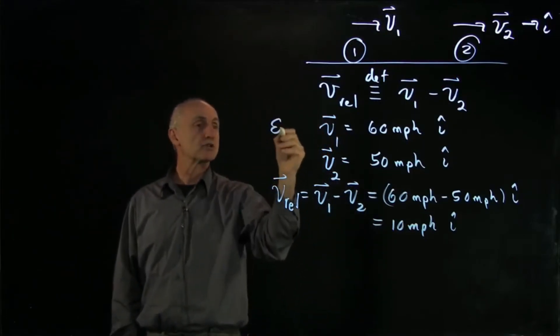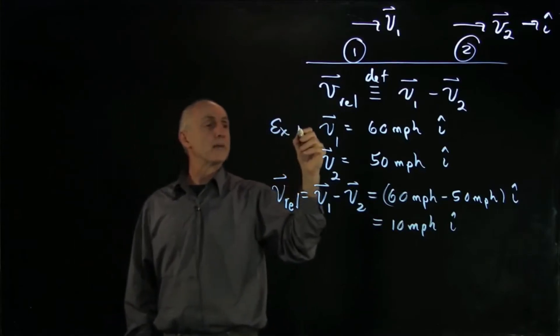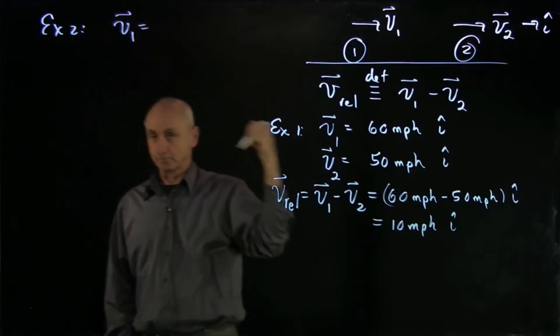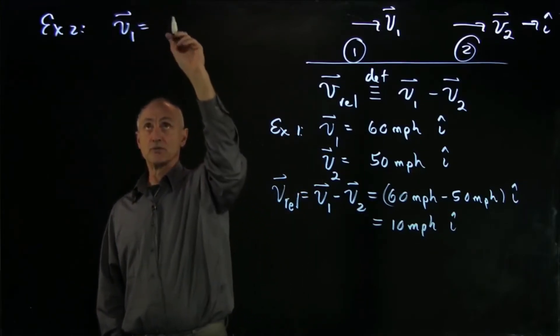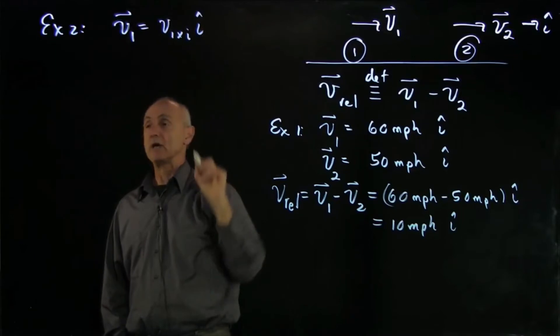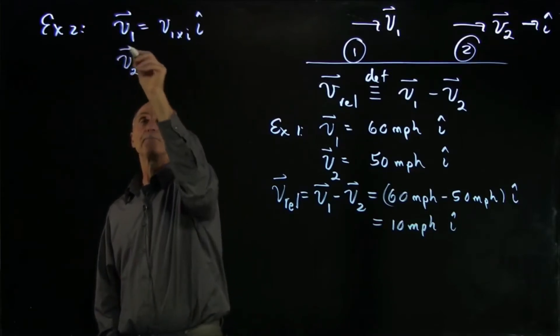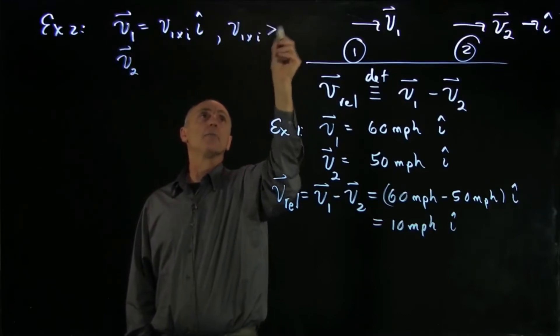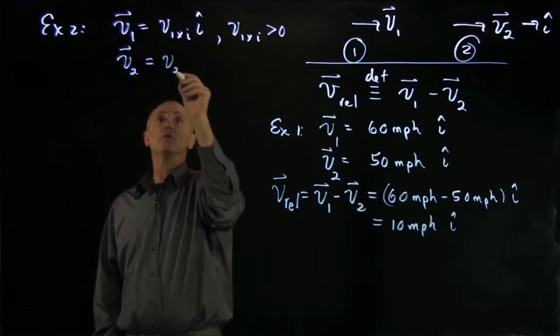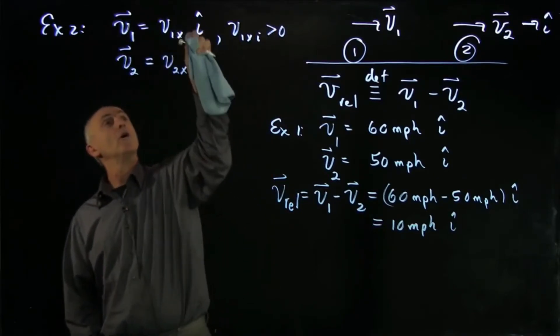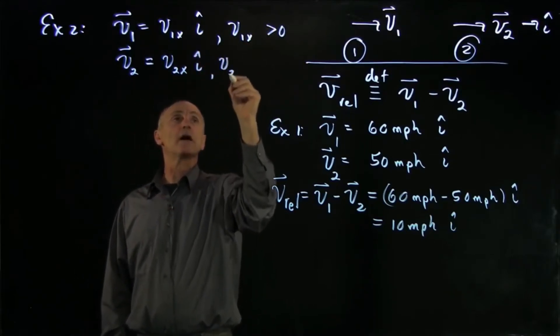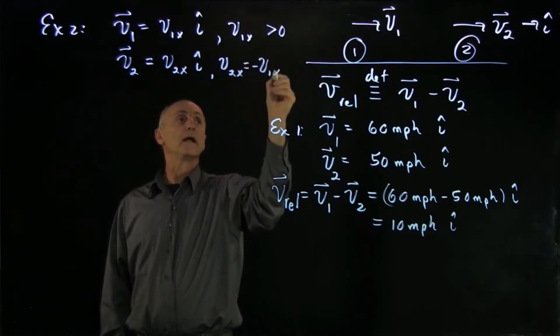There's another important example. So that's example 1. The other important example to look at, example 2, is when two objects are moving in opposite directions. So let's just write them in terms of components this time. So we have v1 x, and we have v2. And let's make v1 x positive, so object 1 is moving in that direction. And let's write this one as v2 x. We don't have to call this initial. We'll just call it v2 x i-hat. And here, v2 x is equal to minus v1 x.